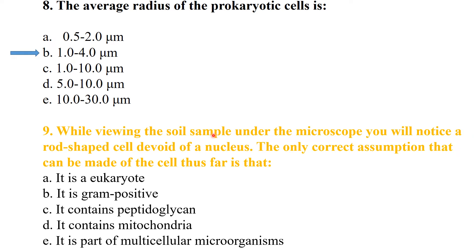While viewing a soil sample under the microscope, you notice a rod-shaped cell dividing. The only correct assumption that can be made about this cell is that it contains peptidoglycan. You cannot assume it has a visible nucleus, is gram-positive, or is eukaryotic. So the best answer is: it contains peptidoglycan.